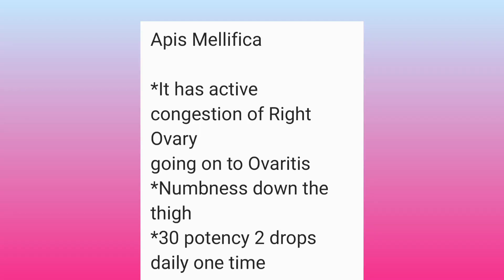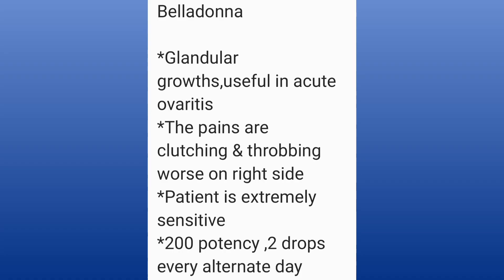The indicating feature for Apis Mellifica is numbness down the thigh. It can be taken in 30 potency, two drops daily, once a day for 15 days. The next drug is Belladonna, an excellent remedy for PCOS problems and glandular growth. It is helpful in acute ovaries; the pains are clutching and throbbing, worse on the right side, and the patient is extremely sensitive. Belladonna can be taken in 200 potency, every alternate day, two drops in the morning for one month.